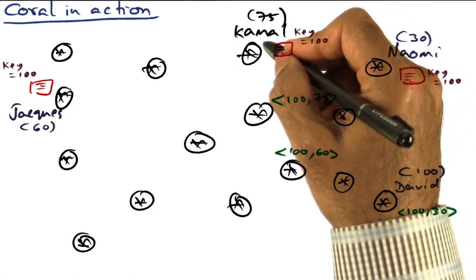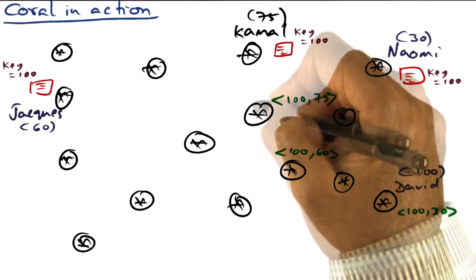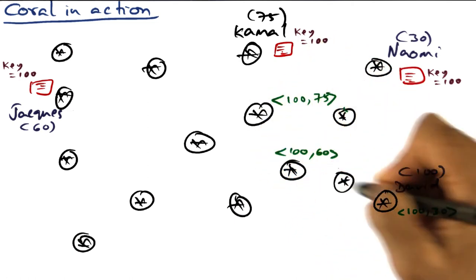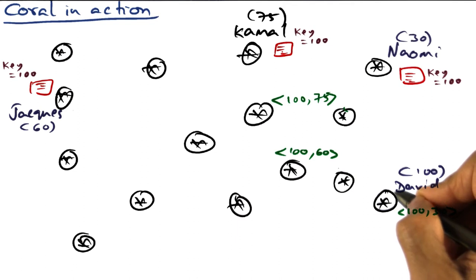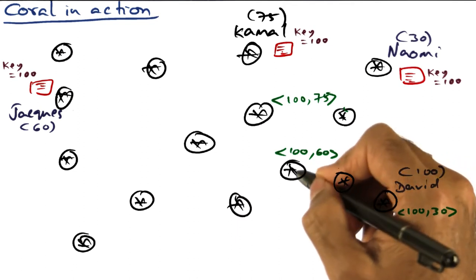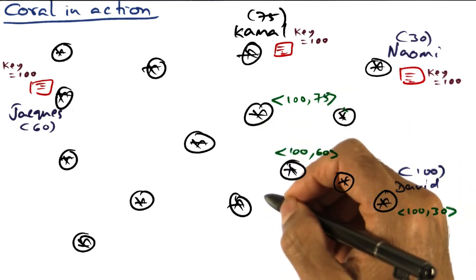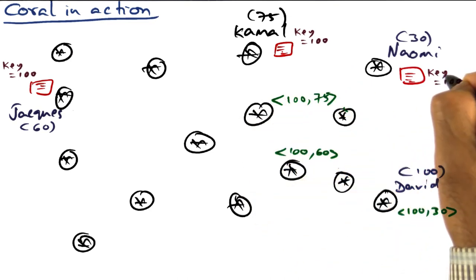So his key value pair entry gets into another intermediate node. Now we've got three nodes that can serve as metadata server for this particular key 100. Not just the original metadata server node, David's computer, but intermediate nodes that also have become part of the metadata server network for this particular key 100.